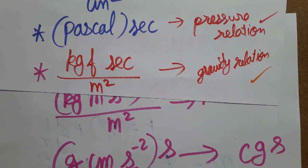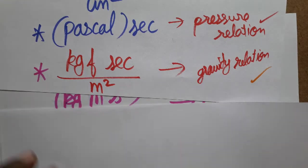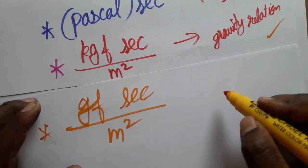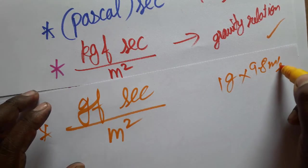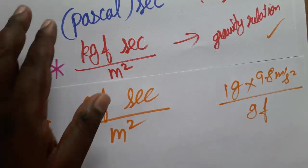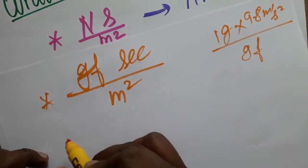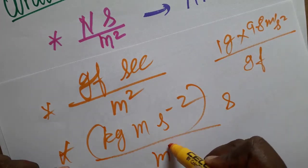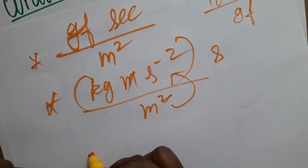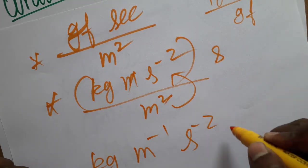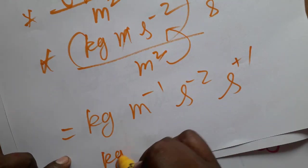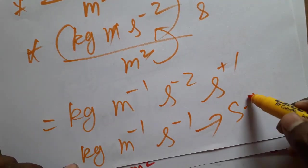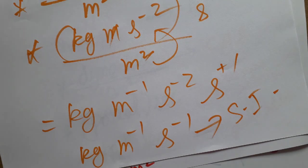Similarly, we can also express it as gf·second per meter square, where gf (gram-force) applies to 1 gram under gravity of 9.8 m/s². Additionally, starting from Newton·second per meter square, substituting Newton as kg·m·s⁻² and simplifying — the meters partially cancel — yields kg·m⁻¹·s⁻¹, which is also a valid SI unit for coefficient of viscosity.